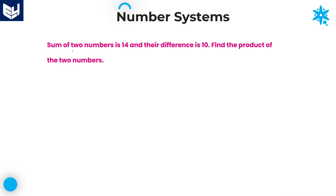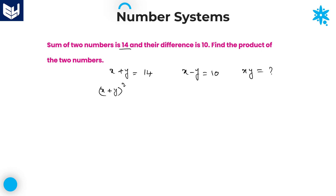Last question in this session: the sum of 2 numbers is 14. Let us take the 2 numbers as x and y, so x + y = 14. Their difference is 10, so x − y = 10. Find the product of the 2 numbers, i.e., calculate x times y. We have a relationship between these three terms: (x + y)² minus (x − y)² equals 4xy.